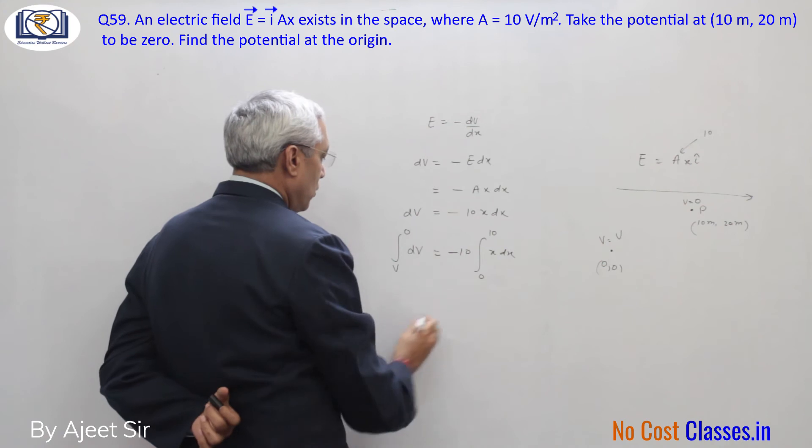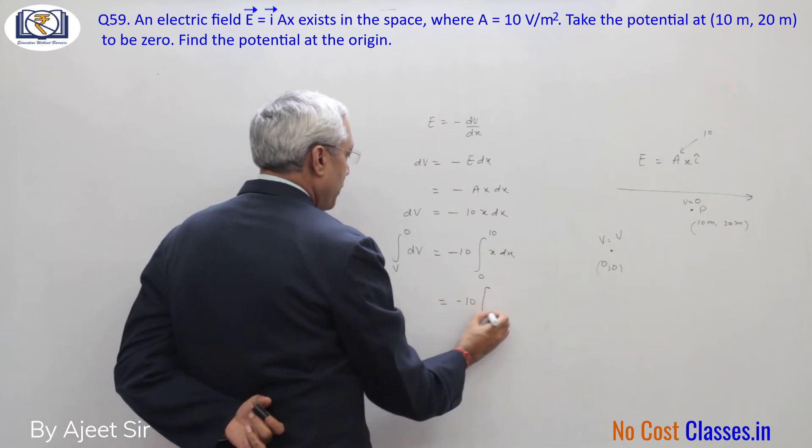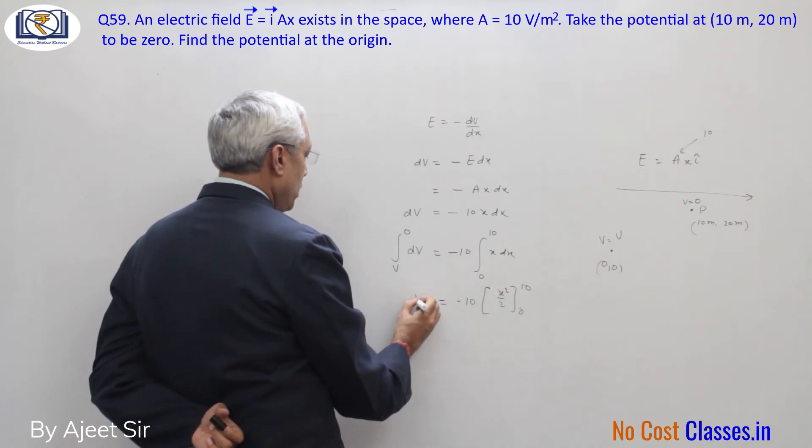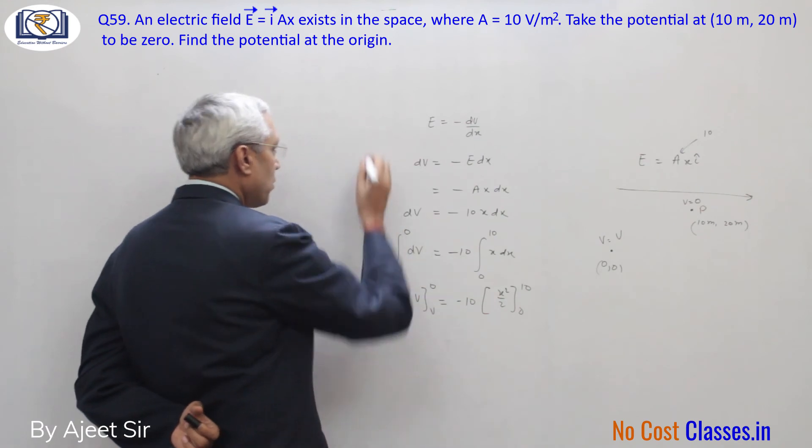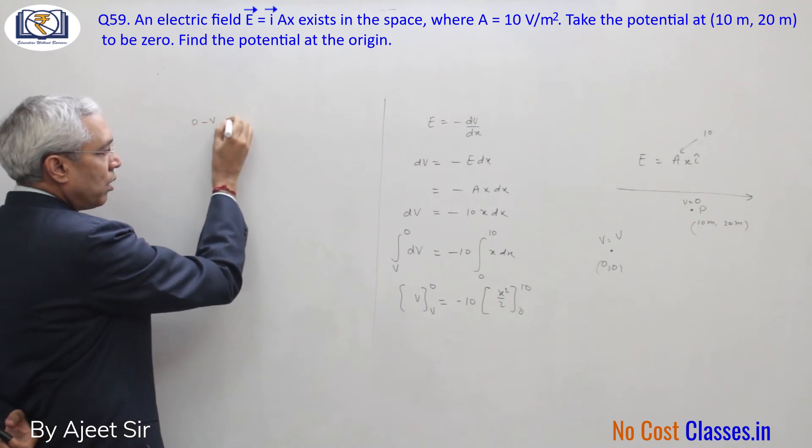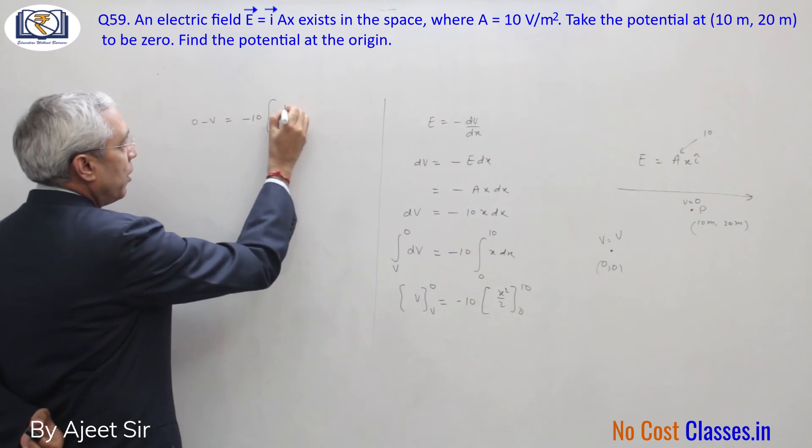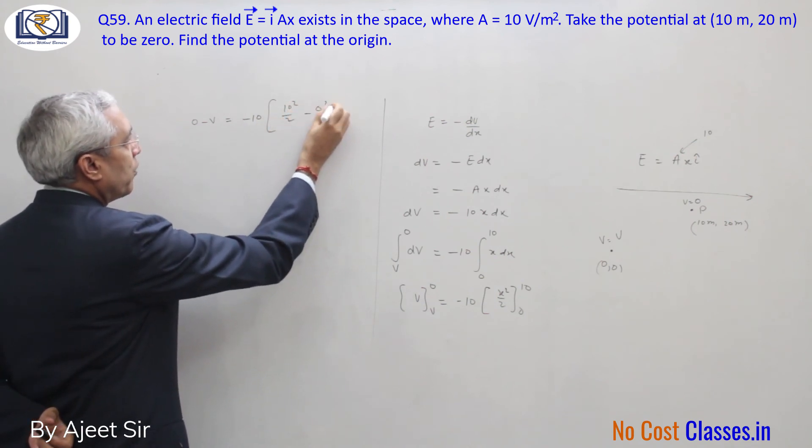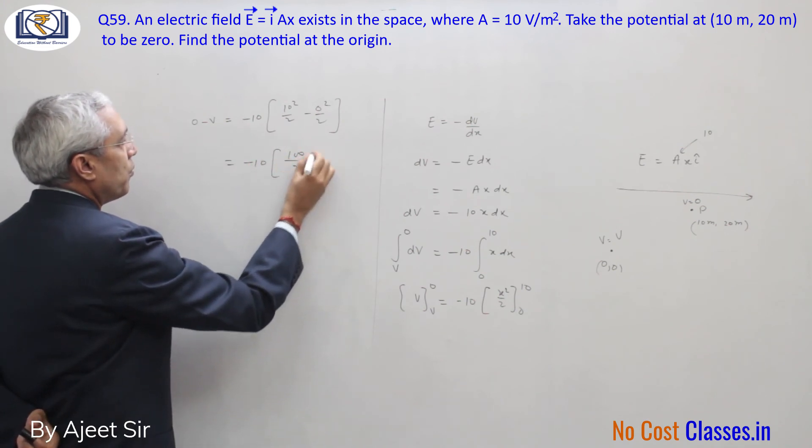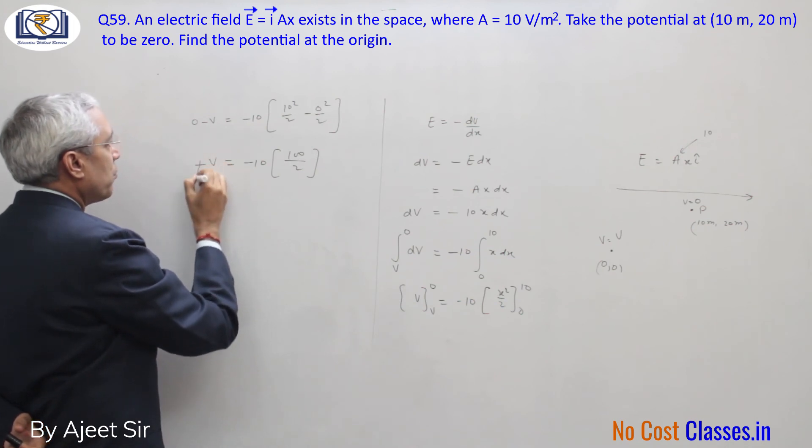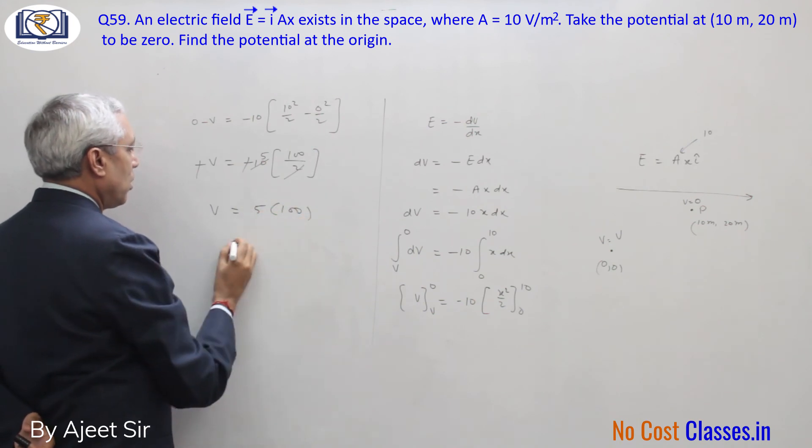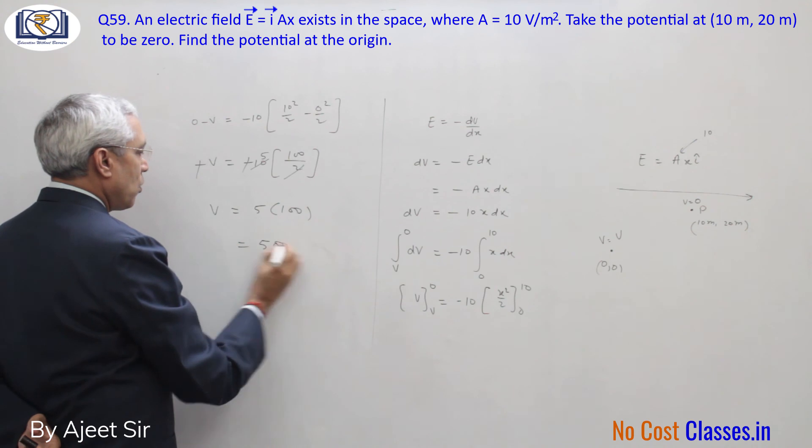So minus 10 into x squared by 2 from 0 to 10, which gives V naught minus Vp equals minus 10 into 10 squared by 2 minus 0 squared by 2. That will be minus 10 times 100 by 2. The minus signs cancel, so V equals 500 volts.